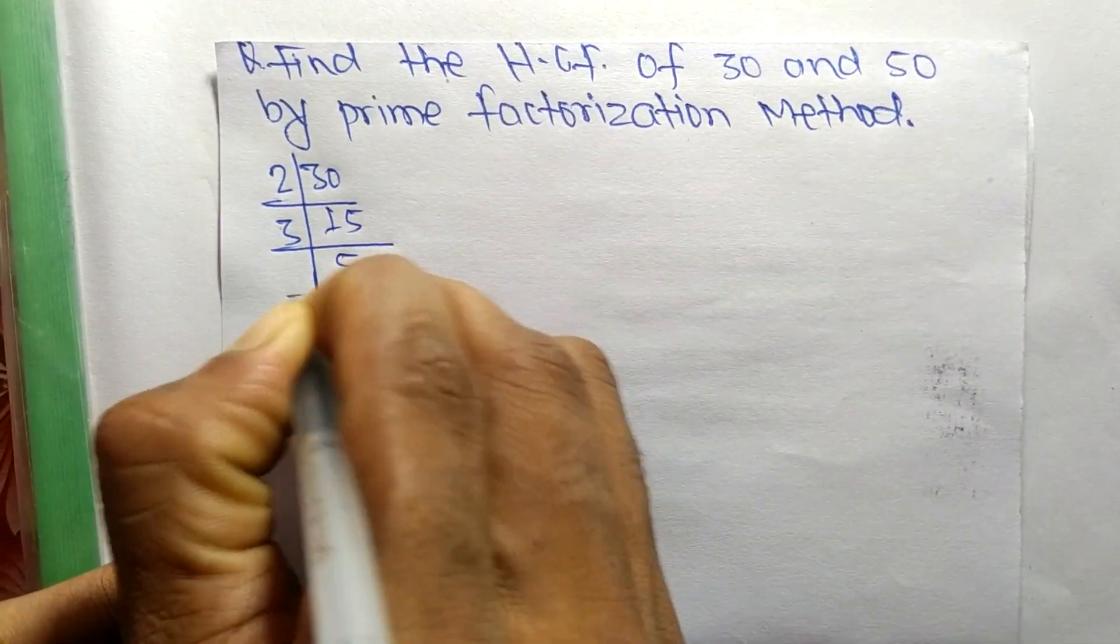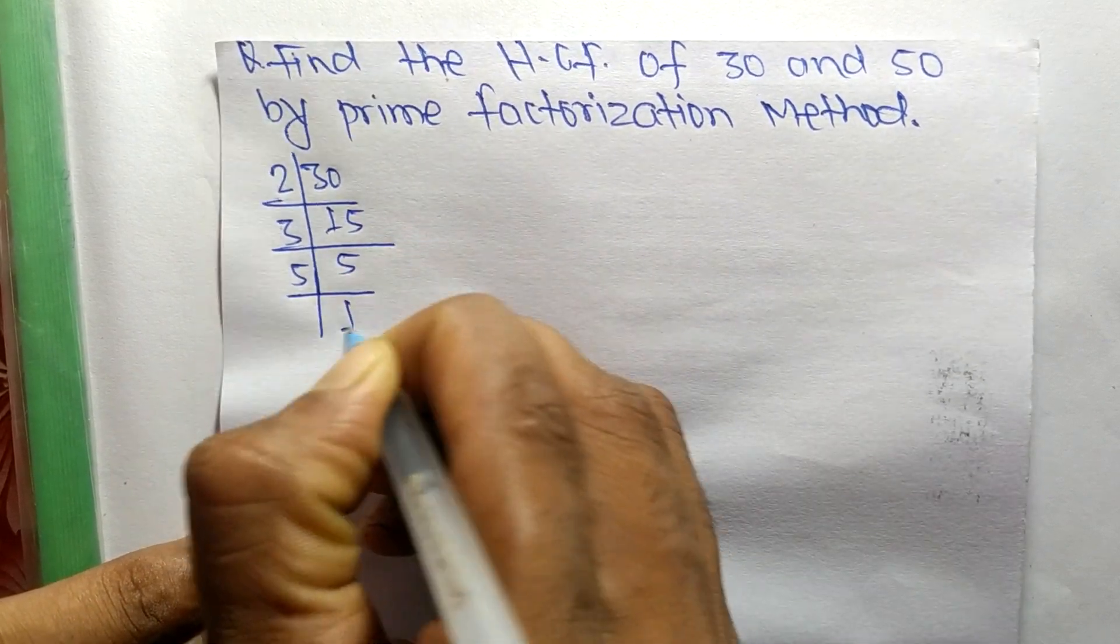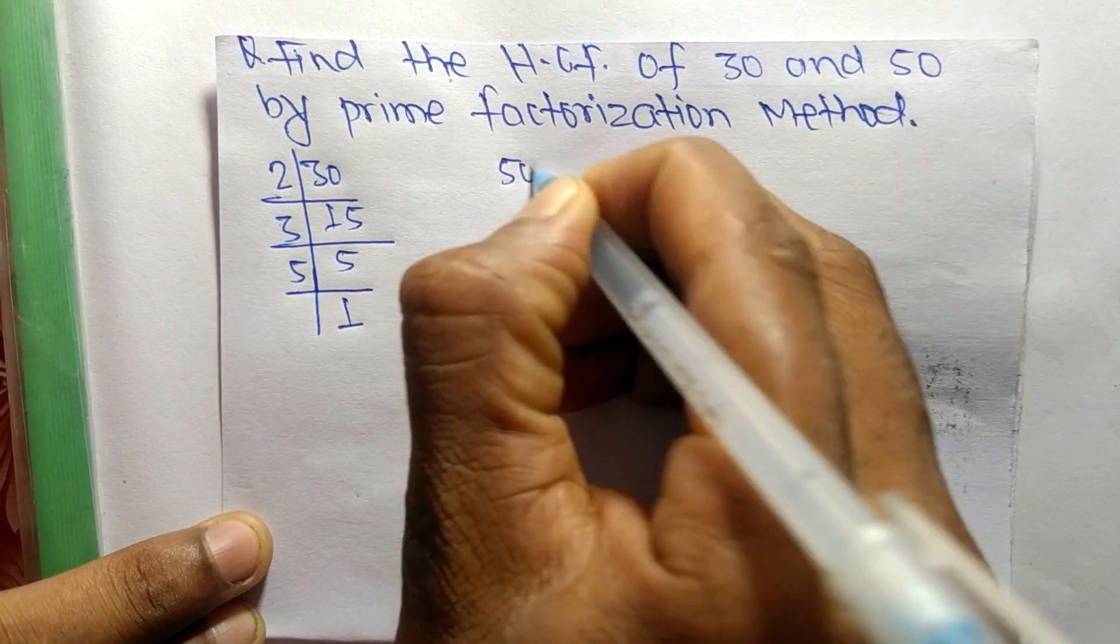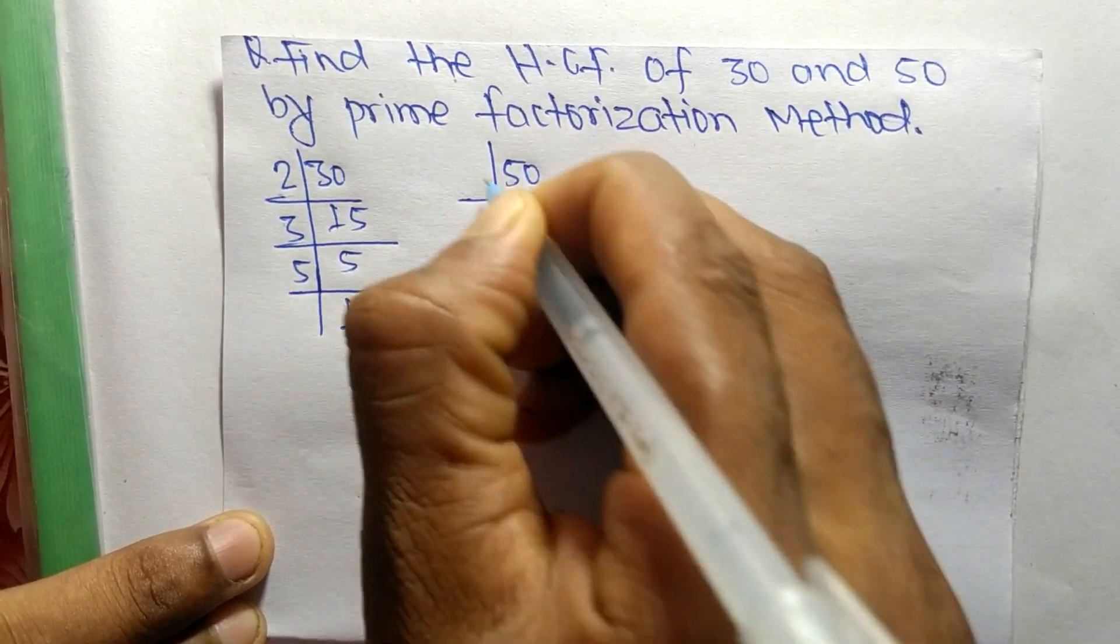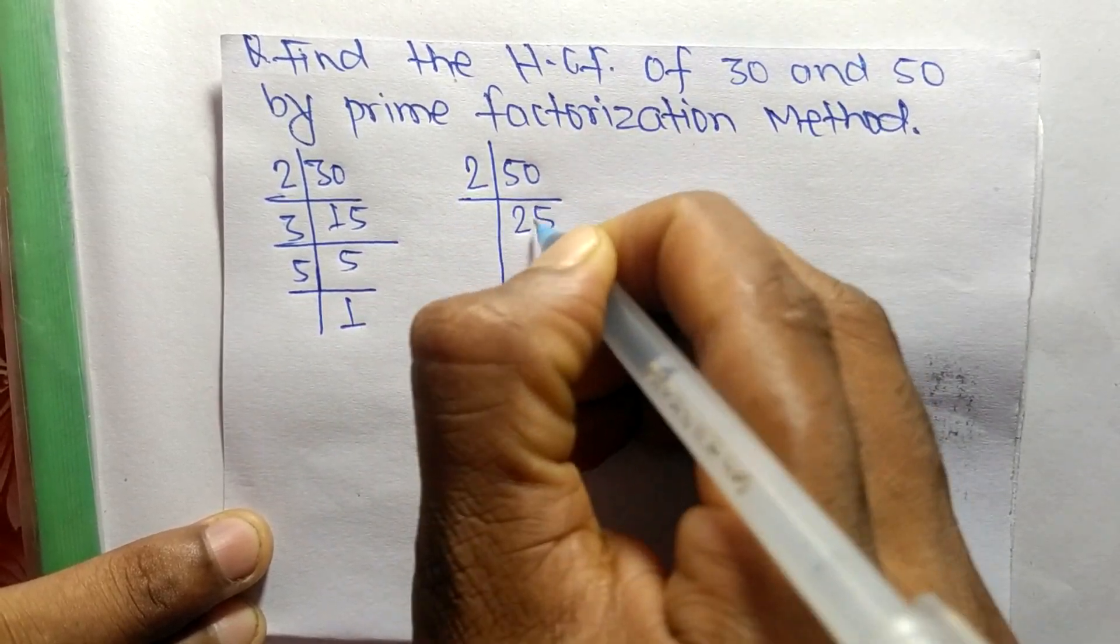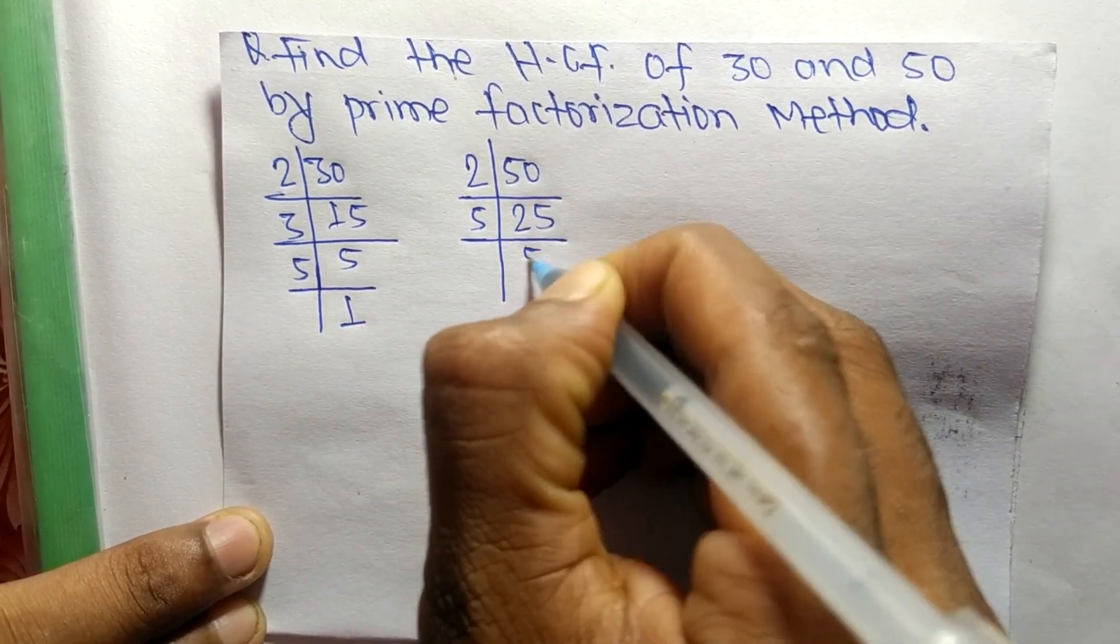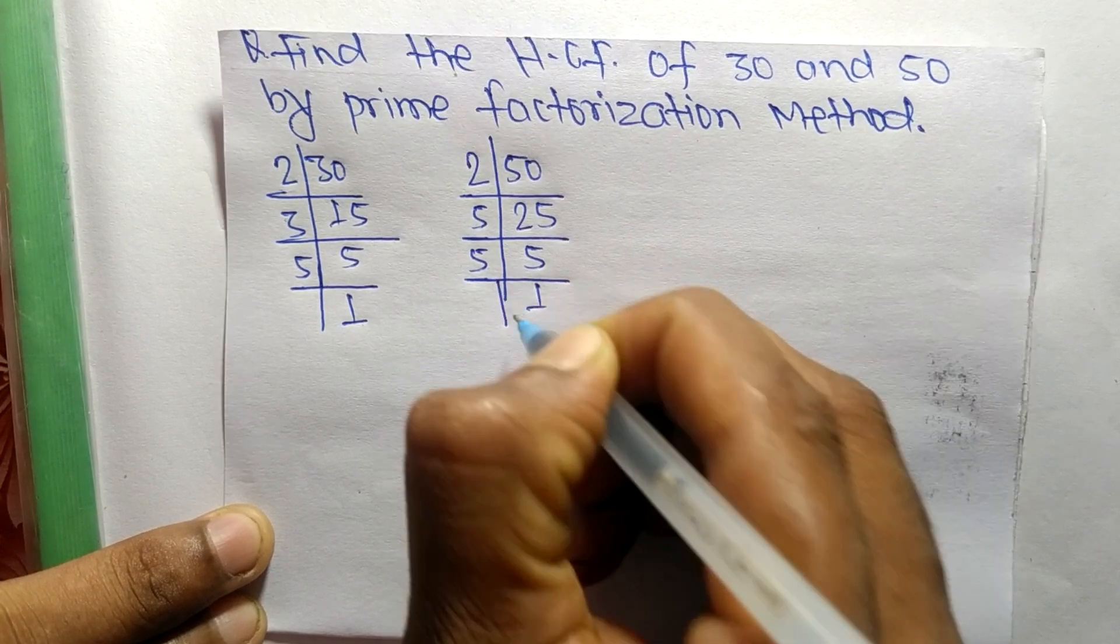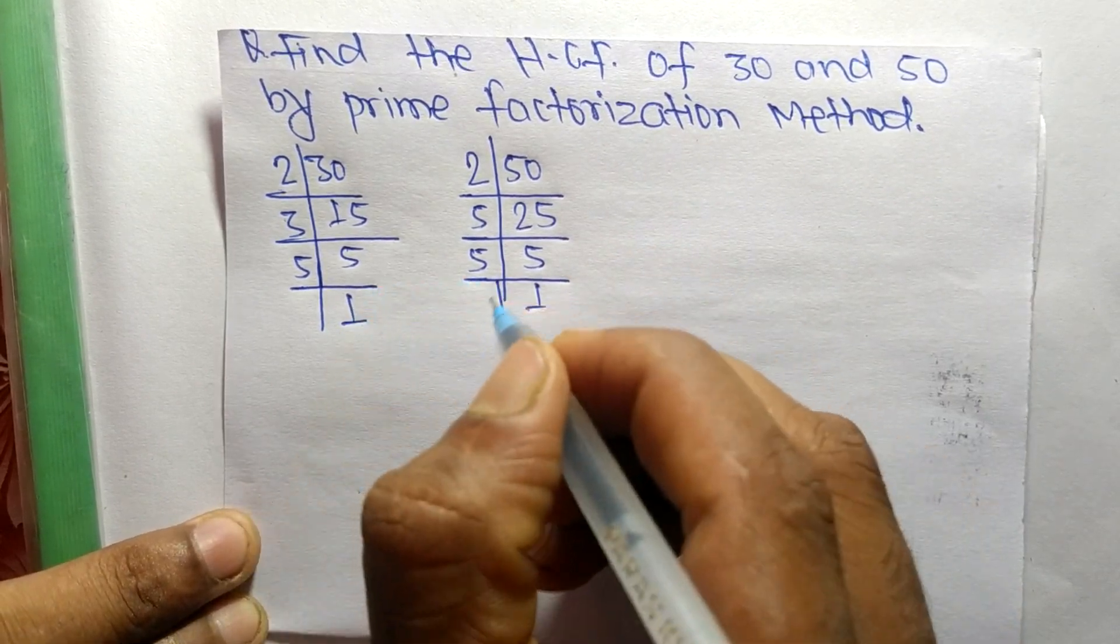The prime factors of 50 are: it is 2 times 25 equals 50, 5 times 5 equals 25, and 5 times 1 equals 5.